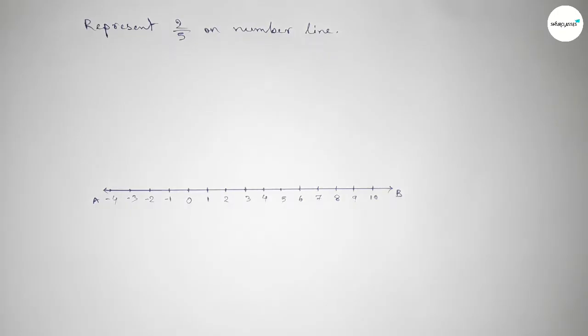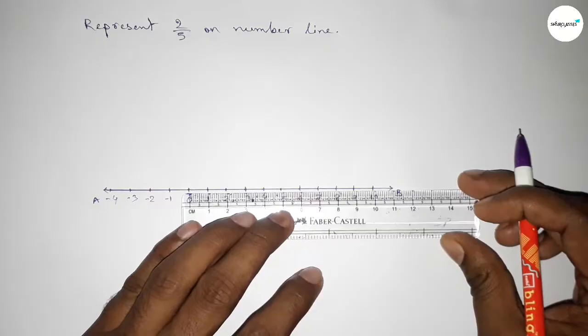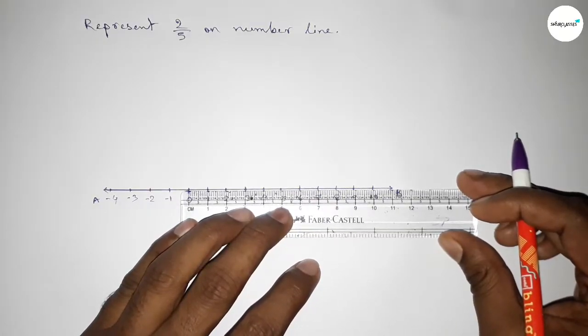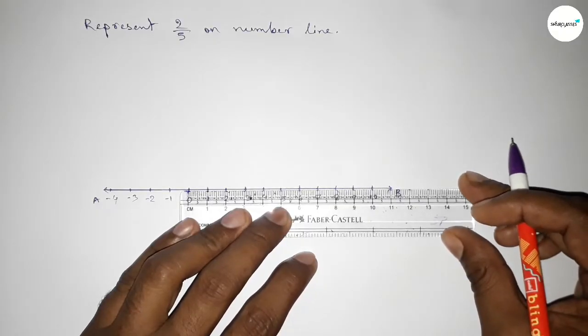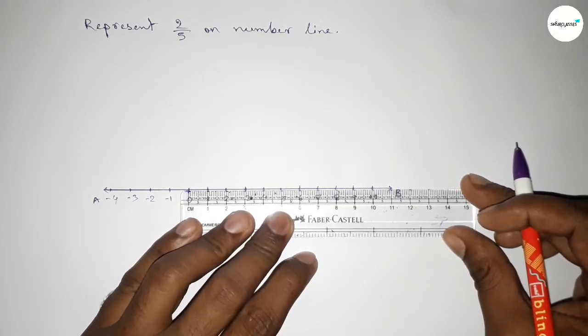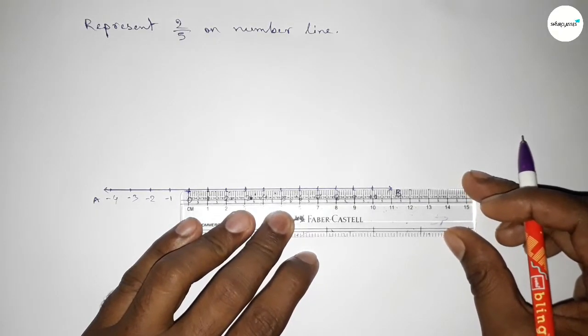Dividing the distance between any two numbers into five parts. So if you divide the distance between any two numbers into five parts, then the length of each part is 0.2 units. So first dividing the distance between zero to one.